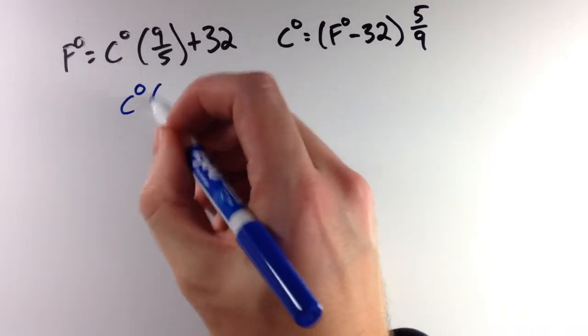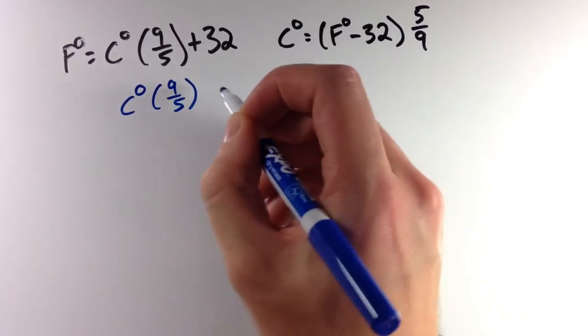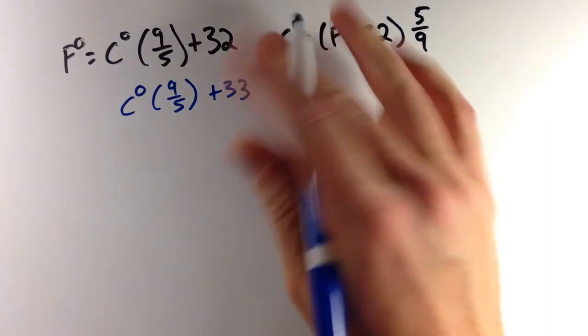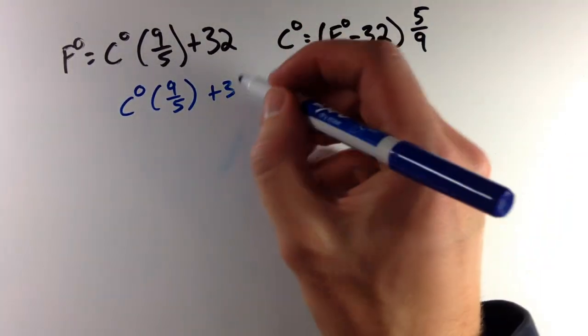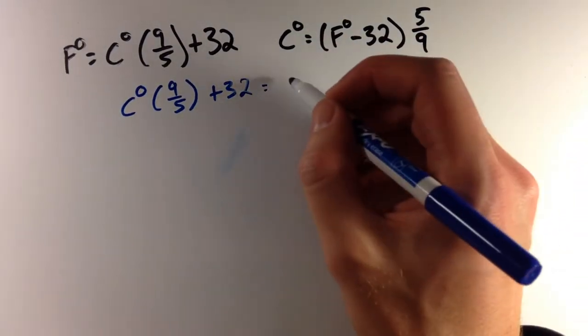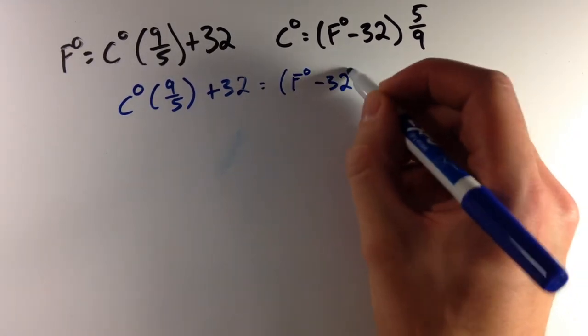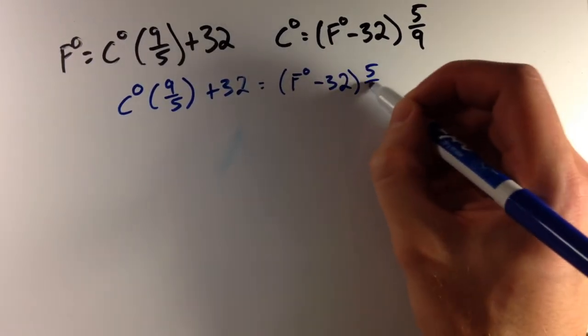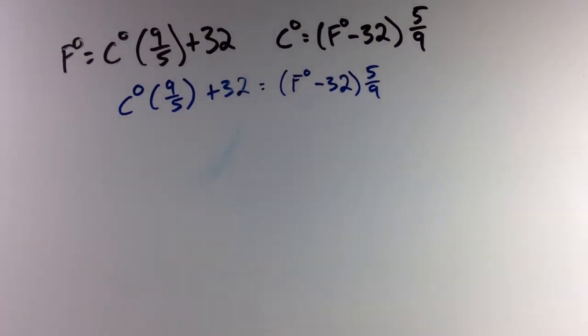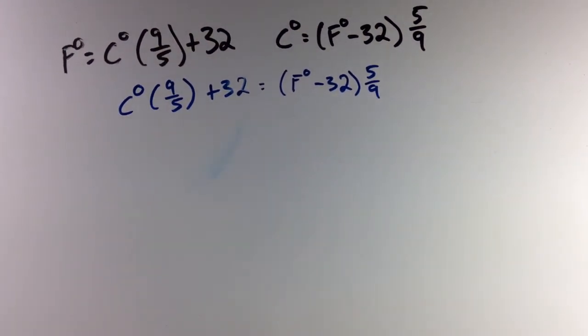And so we can see that C × (9/5) + 32 is equal to (F - 32) × (5/9). But here we're in a predicament because we have Fahrenheit and Celsius still. Well, if we're trying to find where they're equal, we can just make them equal and set them equal to the same variable that F and C are equal.